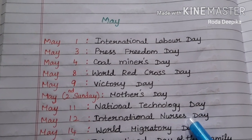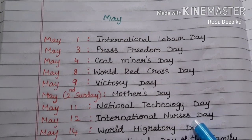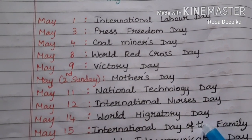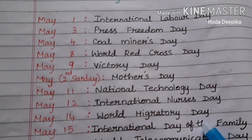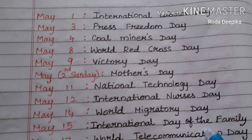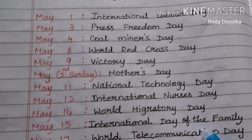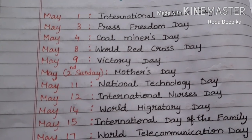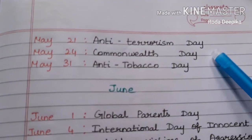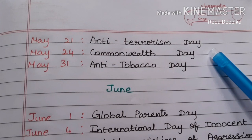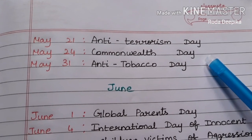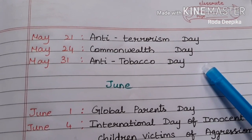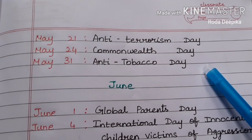May 14: World Migratory Day. May 15: International Day of the Family. May 17: World Telecommunication Day. May 21: Anti-Terrorism Day. May 24: Commonwealth Day. May 31: Anti-Tobacco Day.